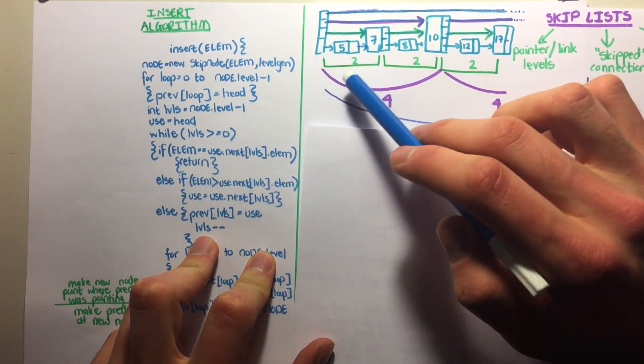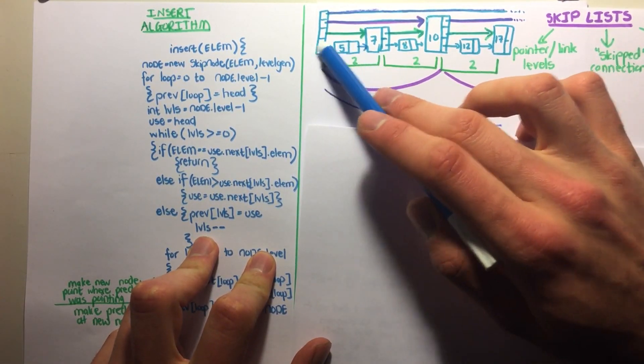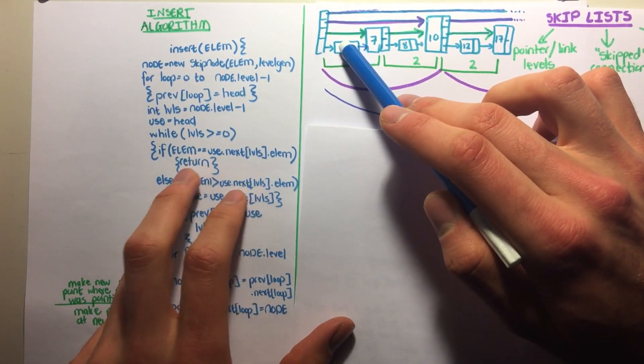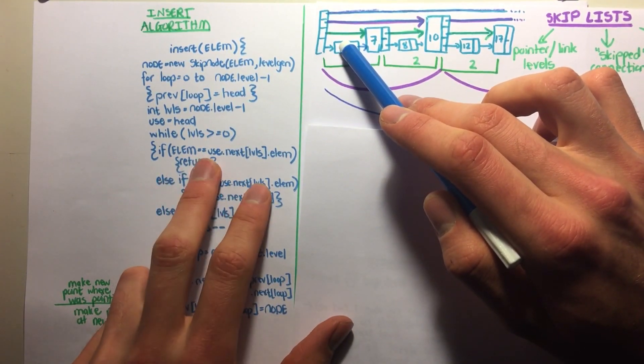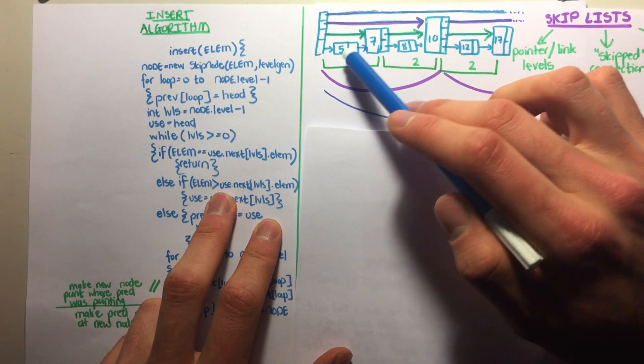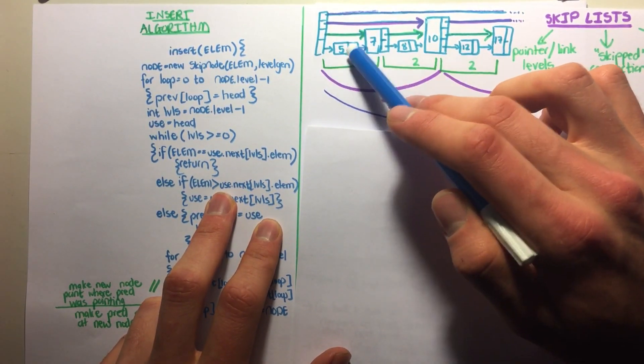We do the same thing. We say, is 9 greater than 5, or equal, or smaller than? It's not equal to, it's greater than. Therefore we carry on and say use is assigned 5.